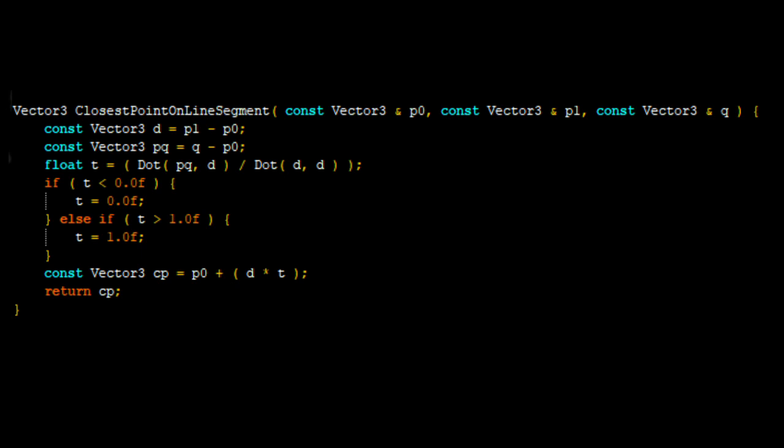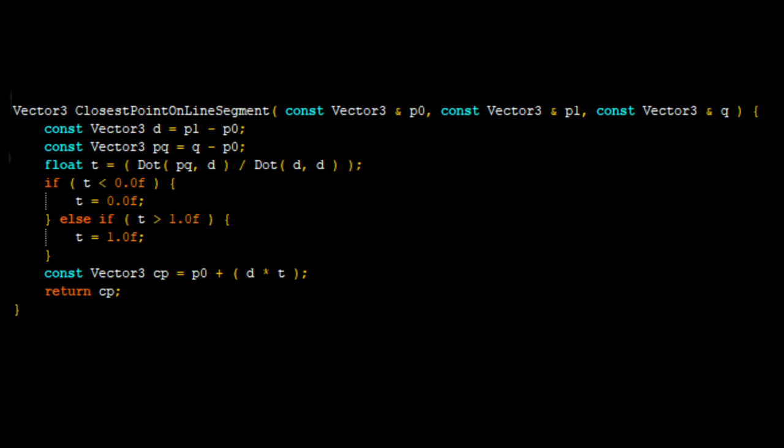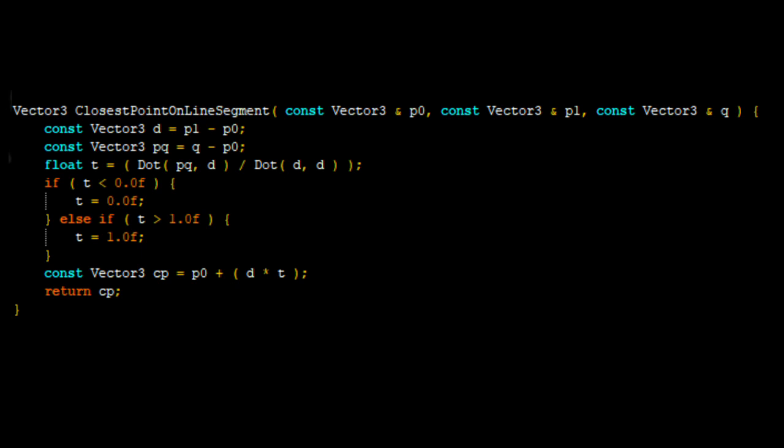So first we do our subtraction to find D and PQ. Then we find the scalar projection of PQ onto D. We saturate that scalar projection, which means to clamp it between 0 and 1 inclusive. Finally, we add to P0 to find the closest point on the segment.